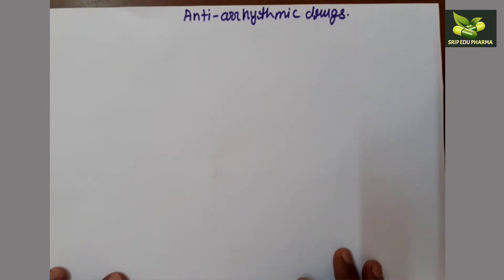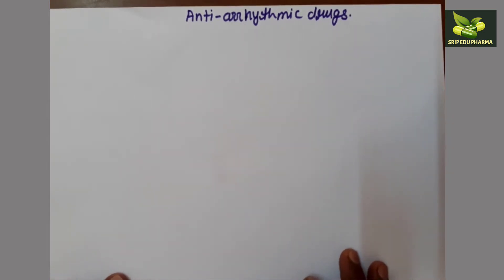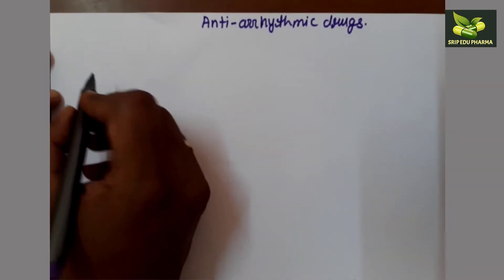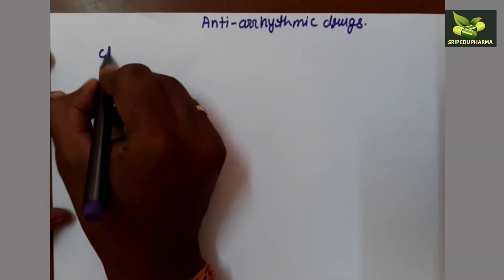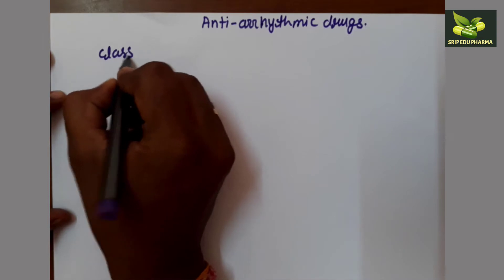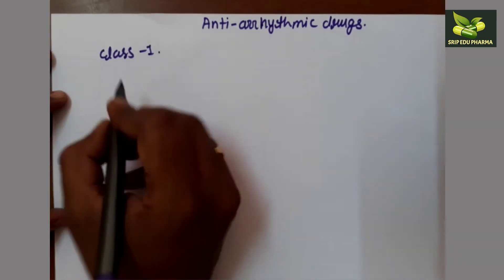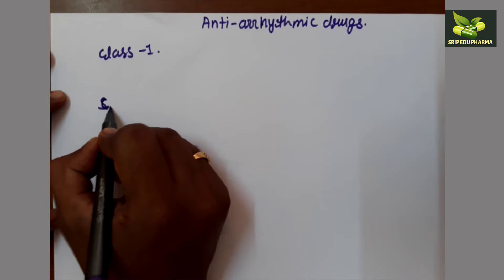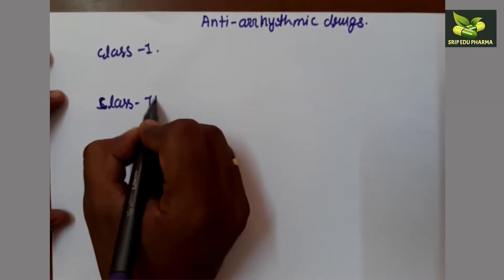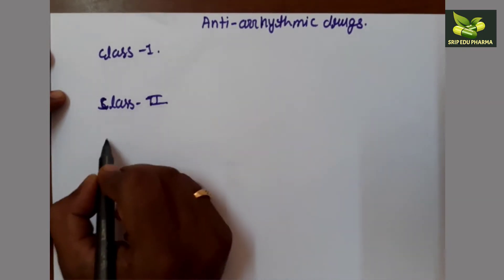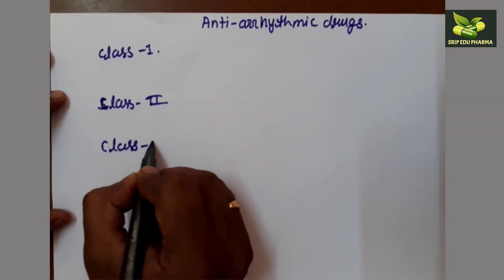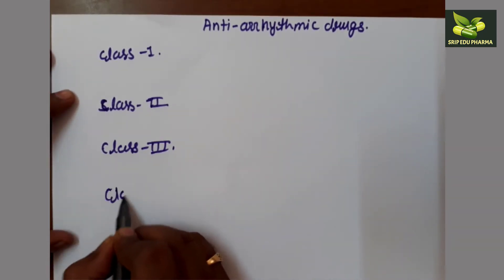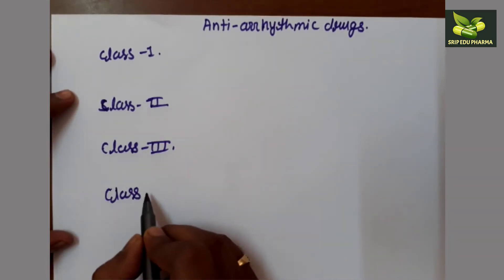Antiarrhythmic drugs are categorized into four different classes: class one, class two, class three, and class four drugs.